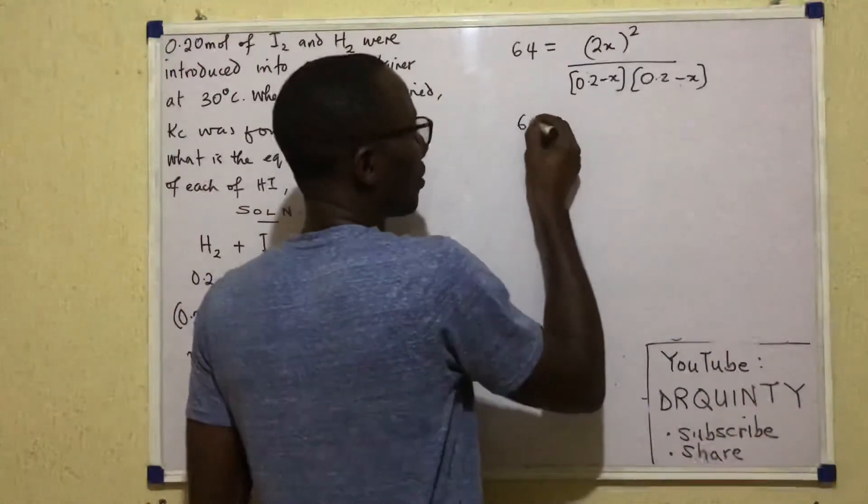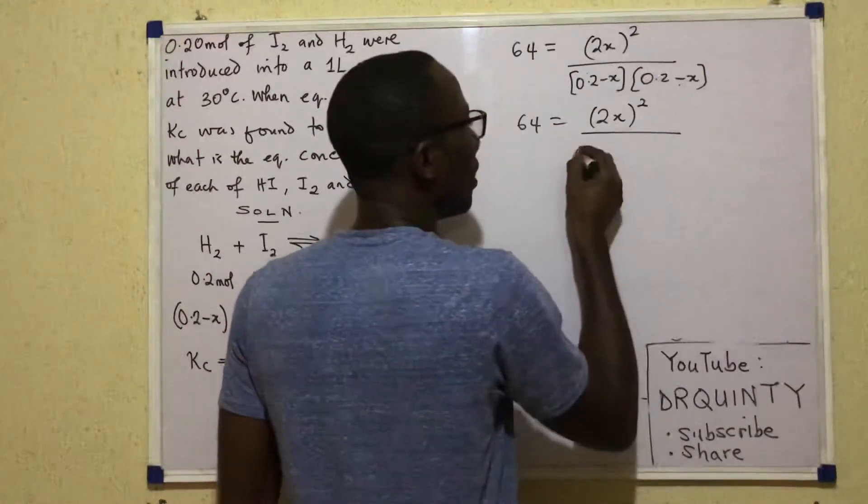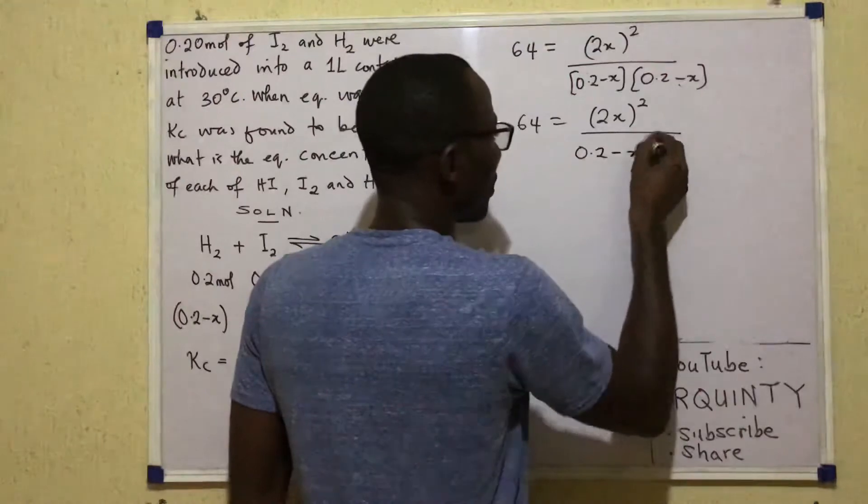over 0.2 minus X into 0.2 minus X. So again, I can say 64 equals 2X squared over 0.2 minus X squared.